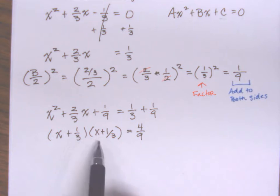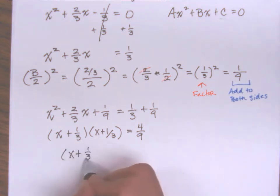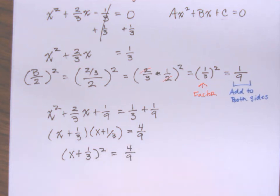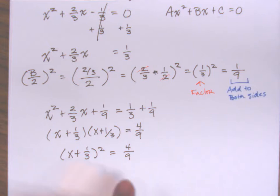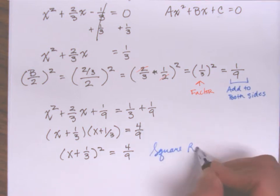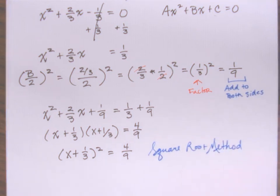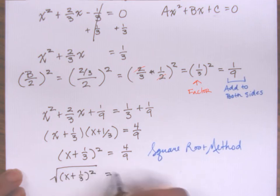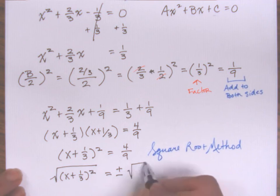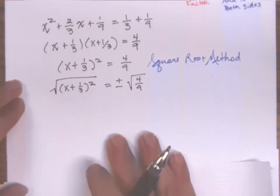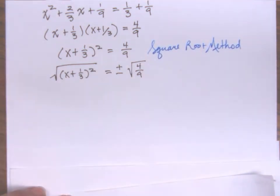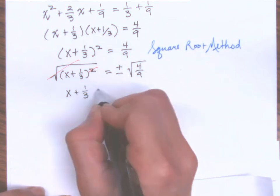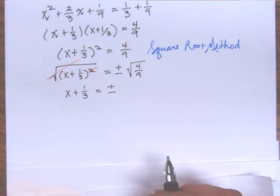I have the same set of parentheses, so I can rewrite it with a square. Now I have something squared equal to a number, which tells me I can use the square root method. So let's put a square root on both sides: the square root of x plus one-third squared equals plus or minus the square root of four over nine. The radical cancels the exponent on the left, leaving x plus one-third equals plus or minus the square root of four-ninths.